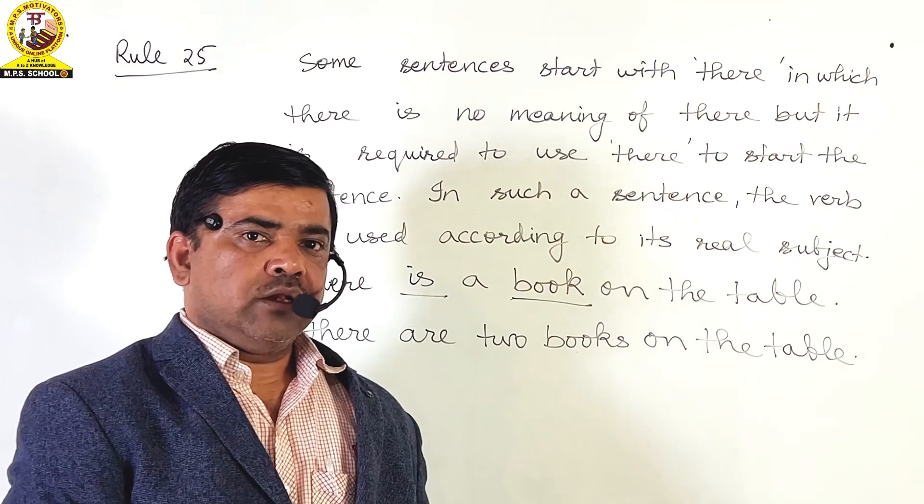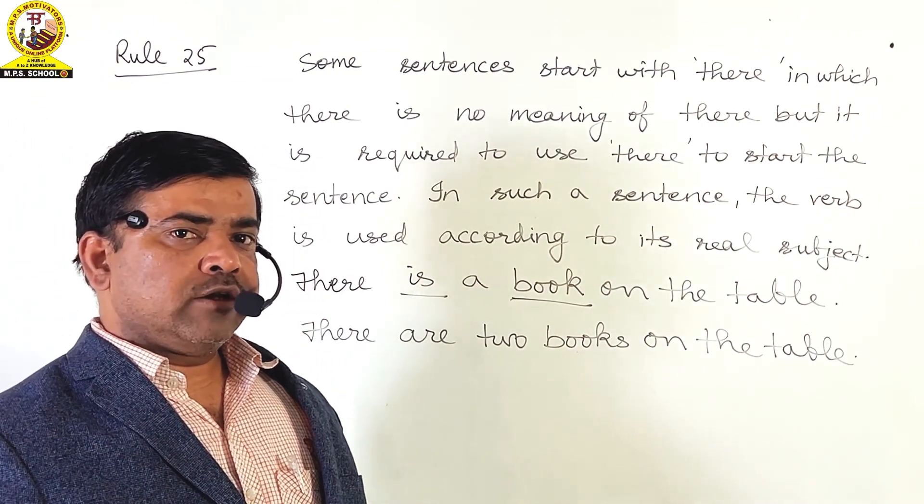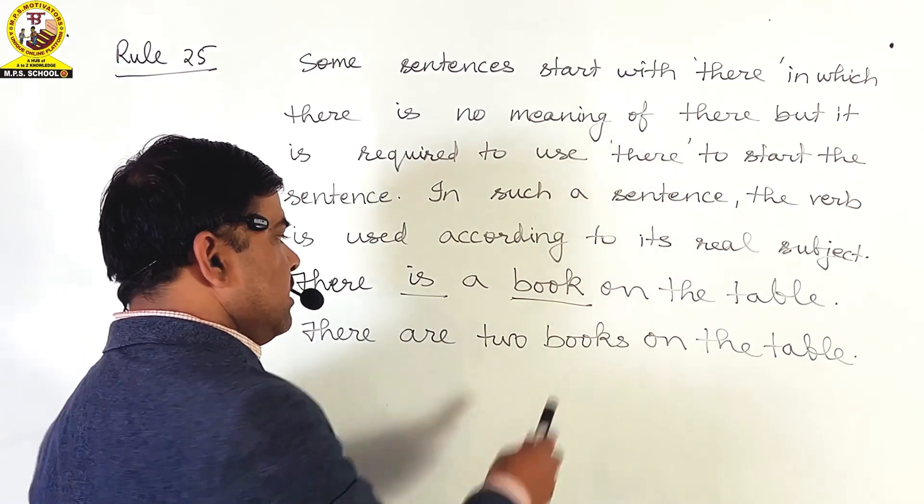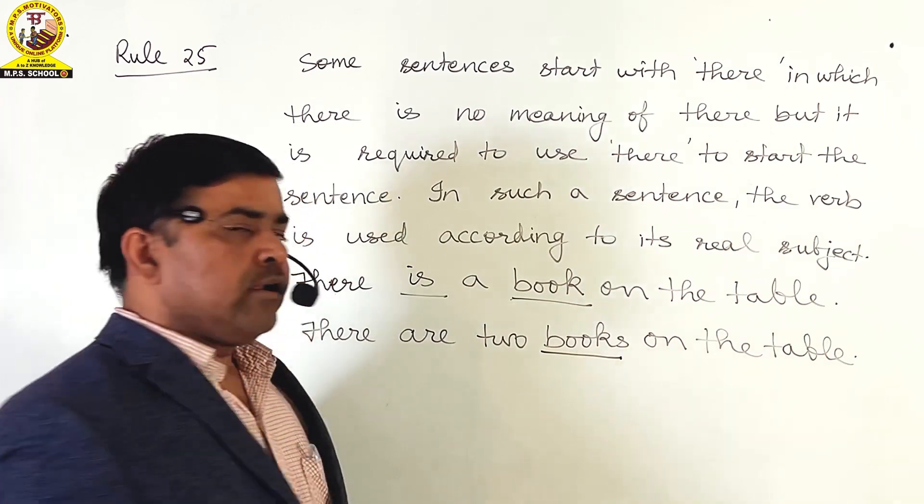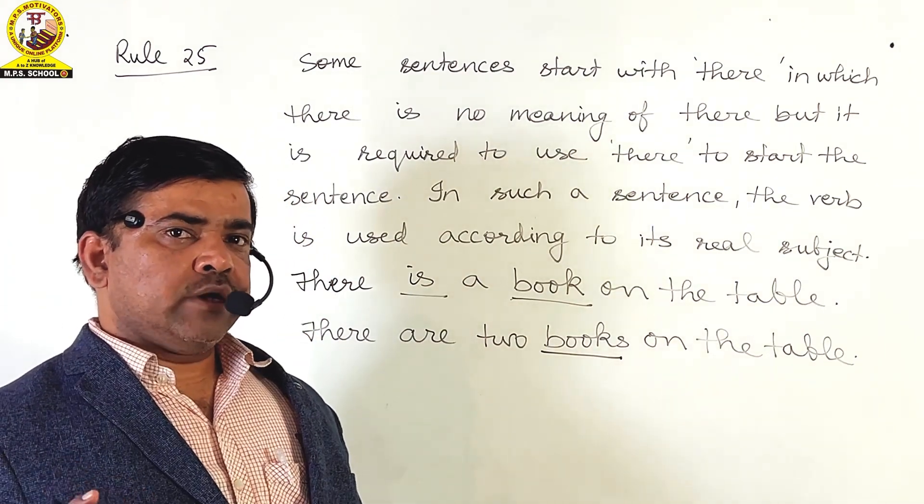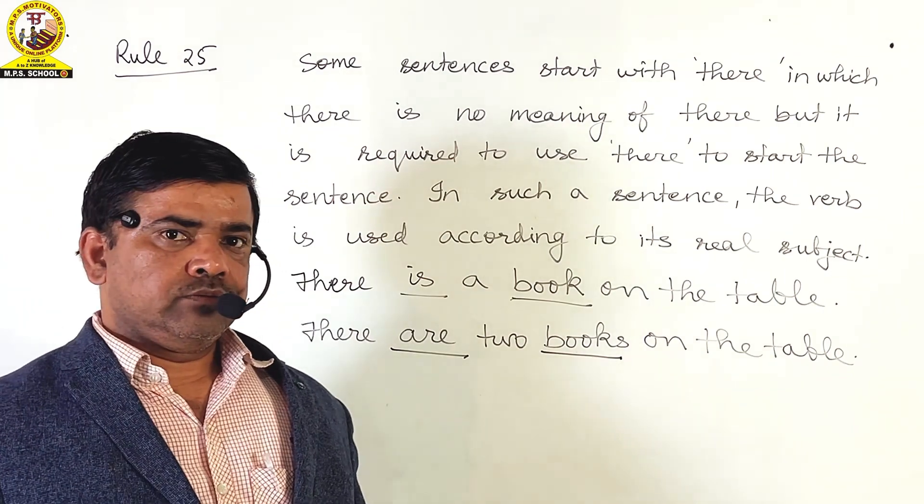In the second example, there are two books on the table. The real subject is books. And according to its number, we have used the plural verb 'are' with it.